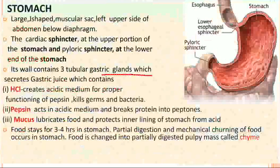The wall of the stomach contains tubular gastric glands which secrete gastric juice containing three substances: HCl, which creates an acidic medium so that pepsin — the major enzyme of gastric juice — can act on proteins, breaking them into peptones and proteoses. Mucus lubricates the food and protects the inner lining of the stomach from the acid, covering it from the corroding action. If there is no mucus, HCl would lead to acidity and formation of gastric ulcers. When food passes from the esophagus to the stomach, it stays there for three to four hours — that's why partial digestion occurs in the stomach. This partially digested pulpy mass of food is known as chyme.